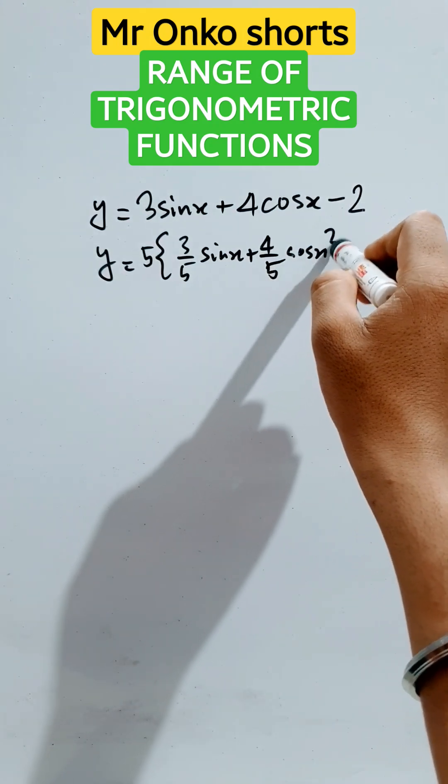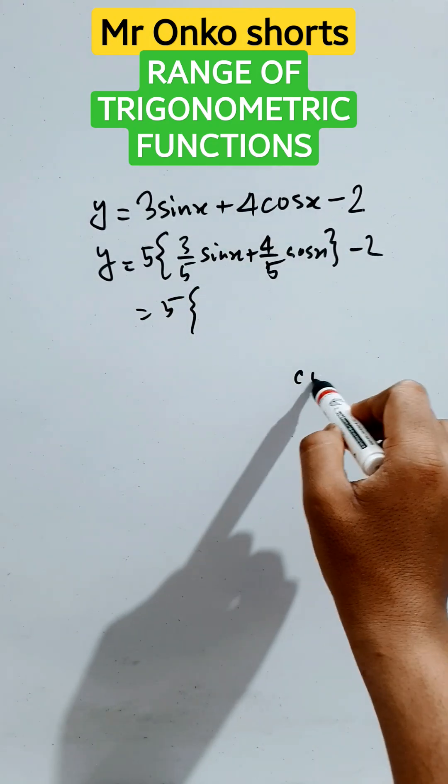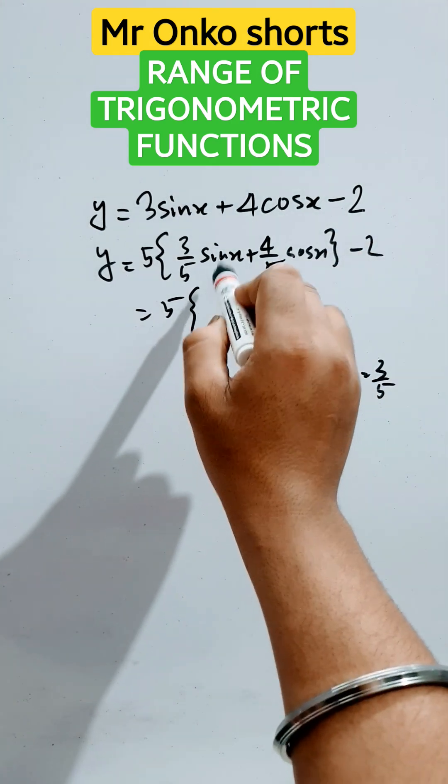So if we take three by five as cos alpha equals to three by five, then sine alpha will be equals to four by five. So it will be in terms of sine of x plus alpha minus two.